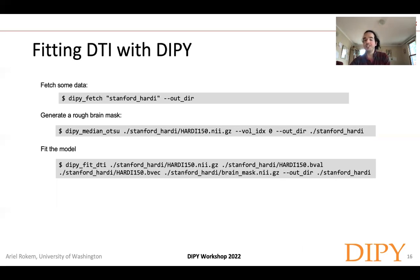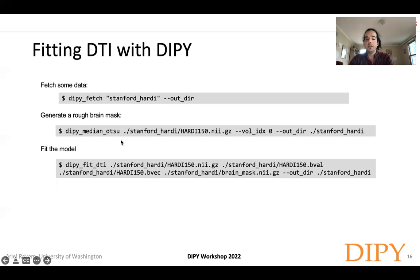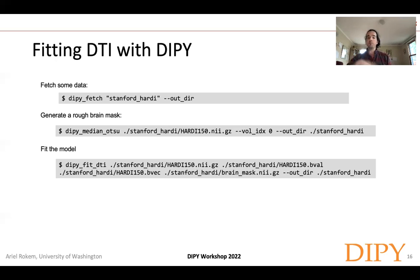Here's how you'd fit DTI with DiPy. In this example, we start by fetching the Stanford HARDI dataset into a directory — you specify the output directory, or leave it empty to copy data to the current location. Then we generate a rough brain mask using the dipy.median_otsu command-line interface. Finally, we fit the DTI model by providing the data, the B values, the B vectors, and pointing to the mask. Running this yields several outputs, including fractional anisotropy, mean diffusivity maps, and the tensor parameters.